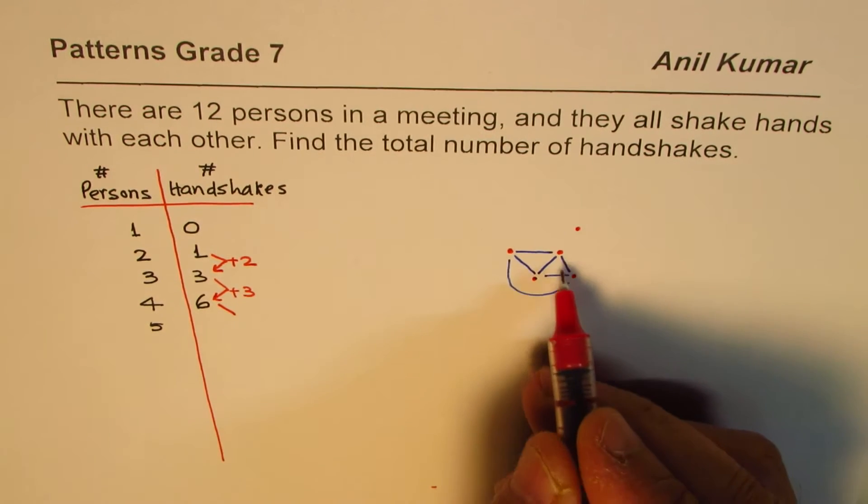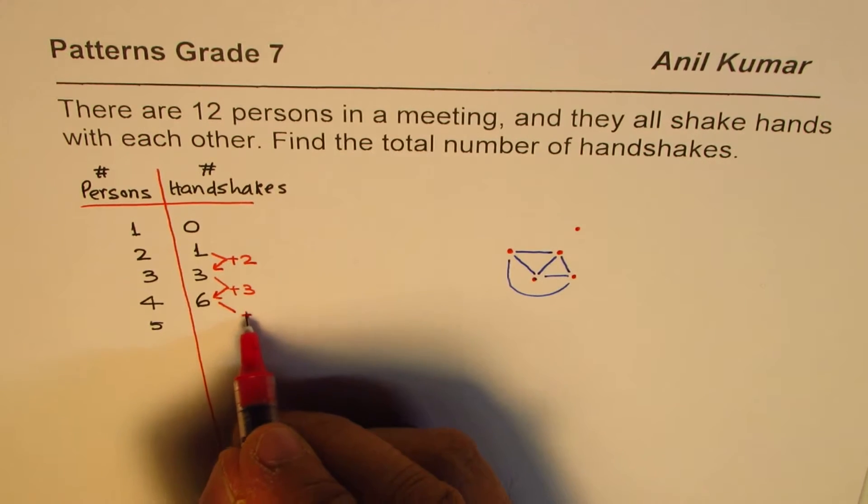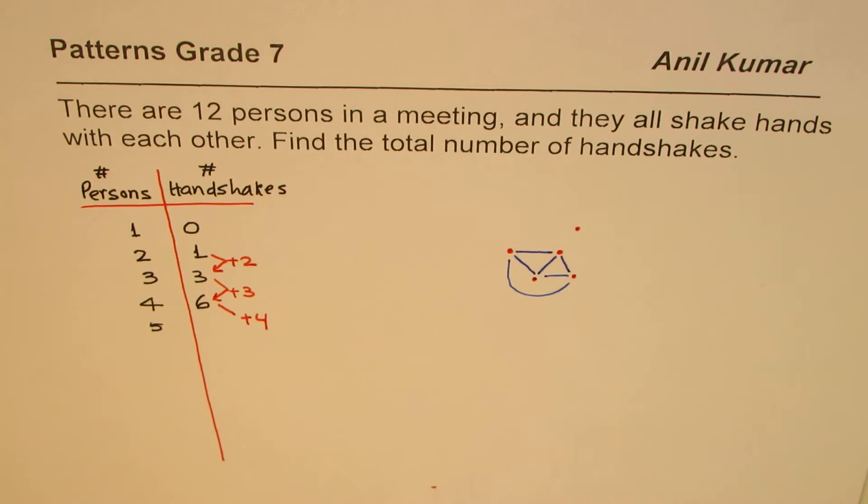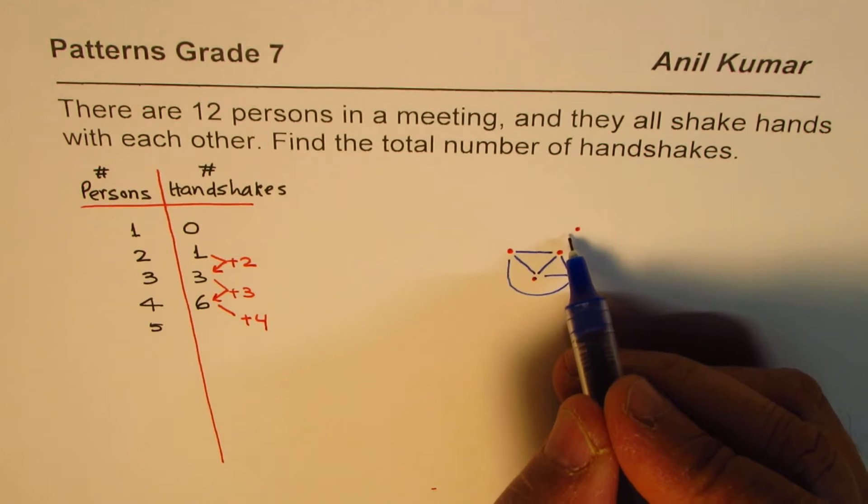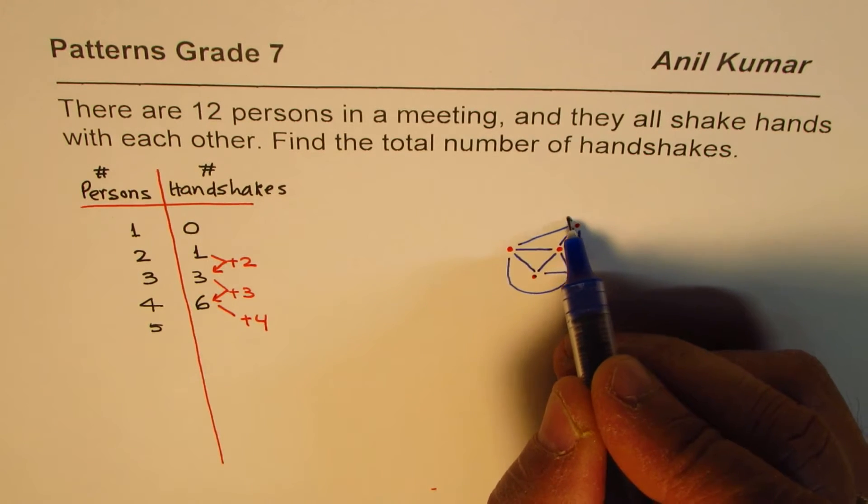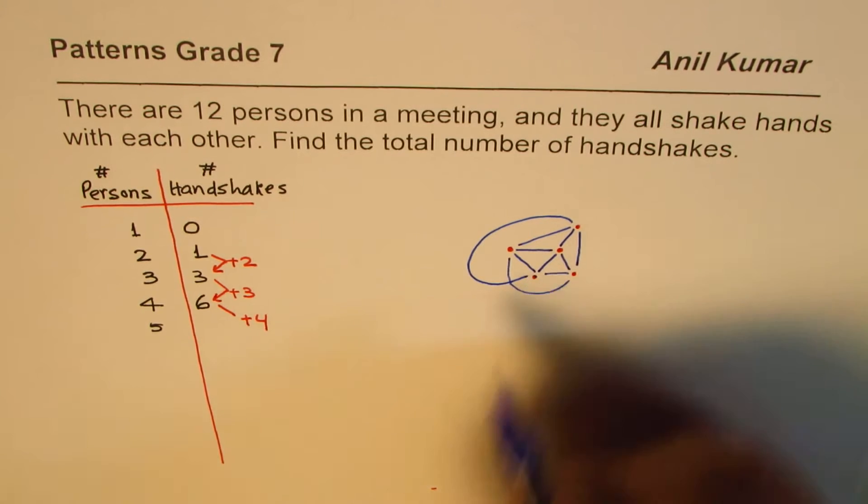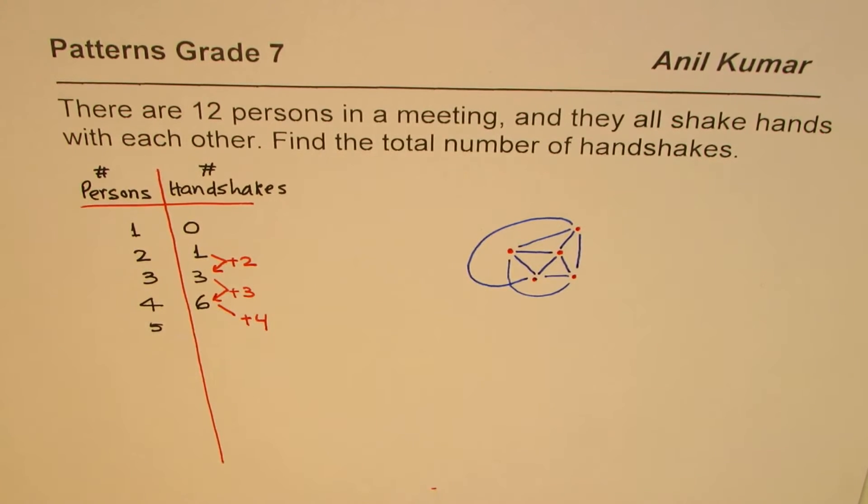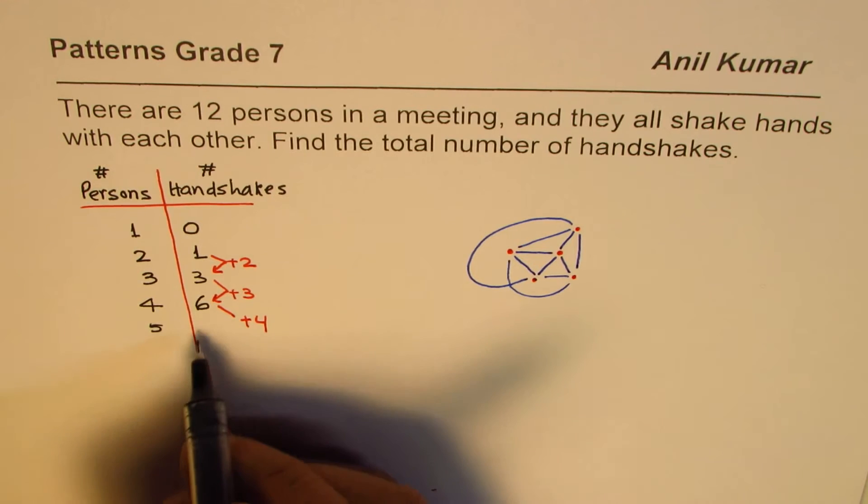So plus 4 handshakes, and these could be shown here in the diagram as 1, 2, 3, and 4. That is how it is. And when you add 4 to 6, you get 10.